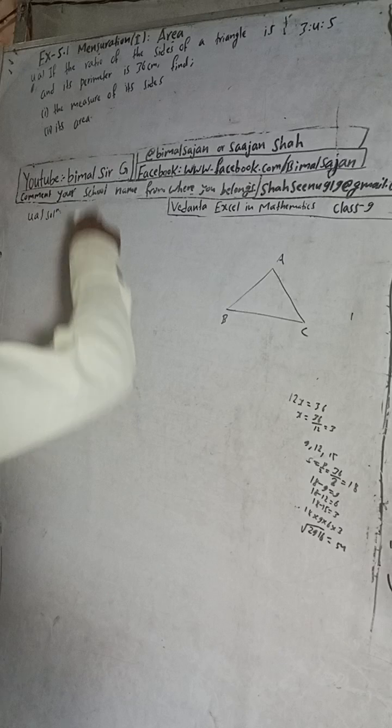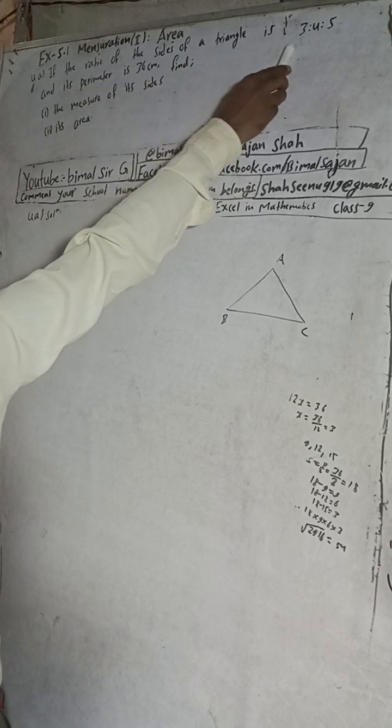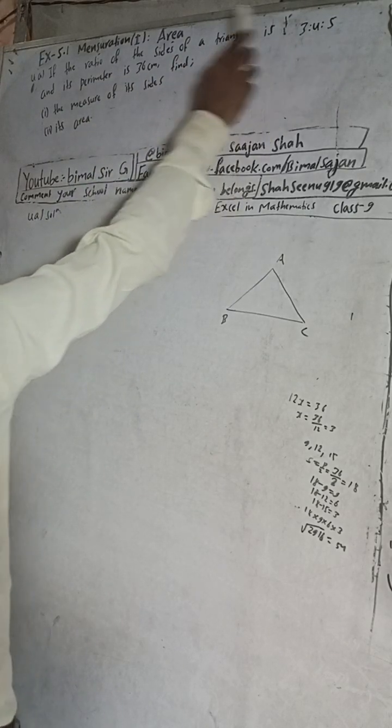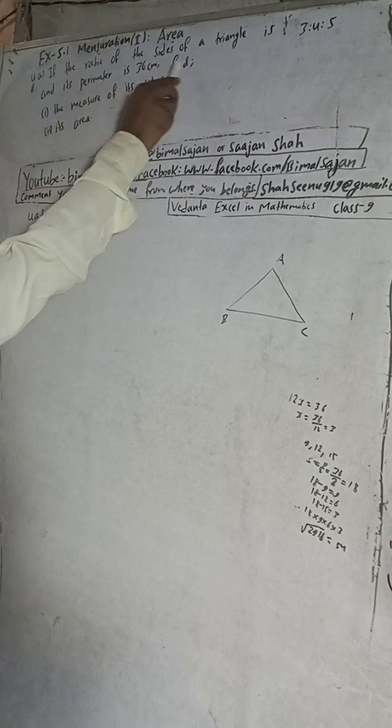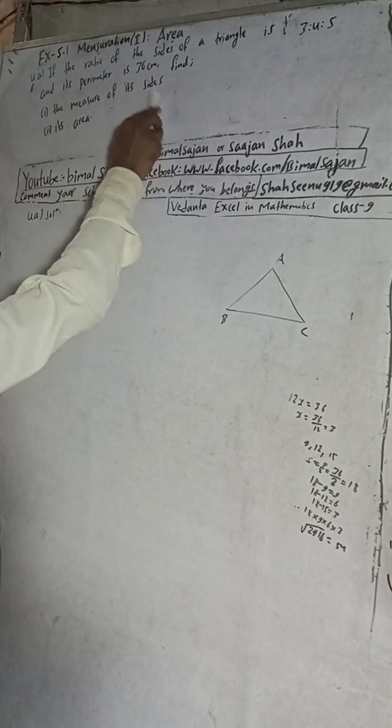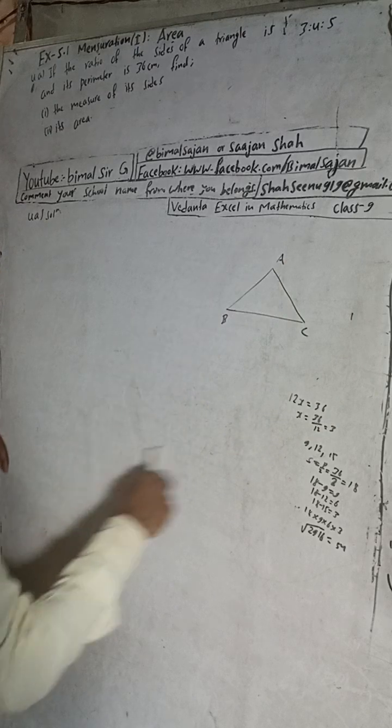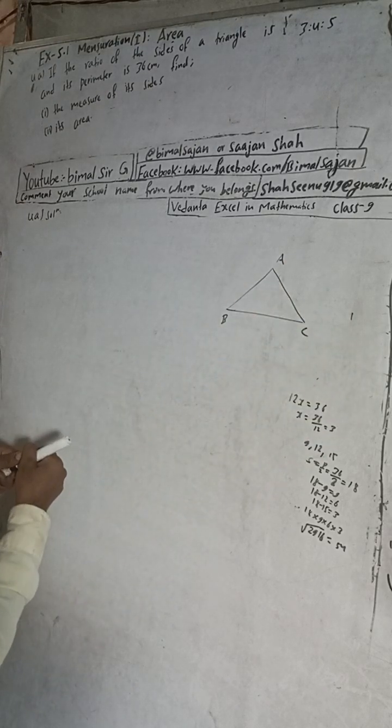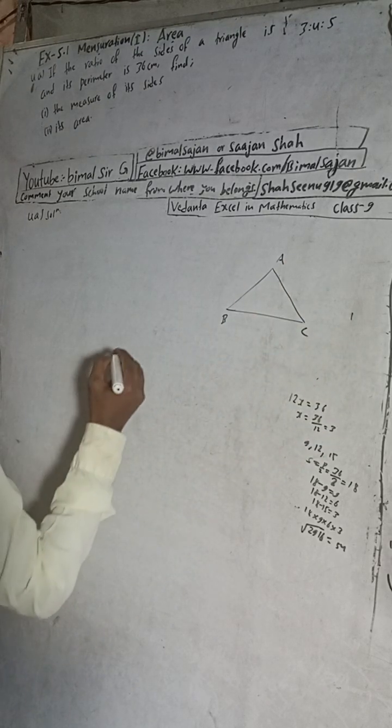Hello class 9 and 10 students, welcome back to Vimal Sarji YouTube channel. This is question number 4a, exercise 5.1, Mensuration, first part — Area, from Vedanth Excel in Mathematics class 9. The question is: if the ratio of the sides of a triangle is 3:4:5 and its perimeter is 36 cm, find the measure of the sides and the area.